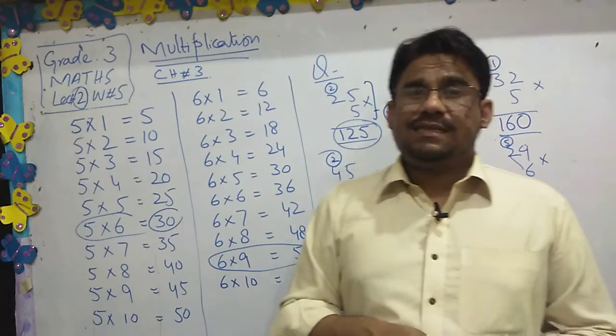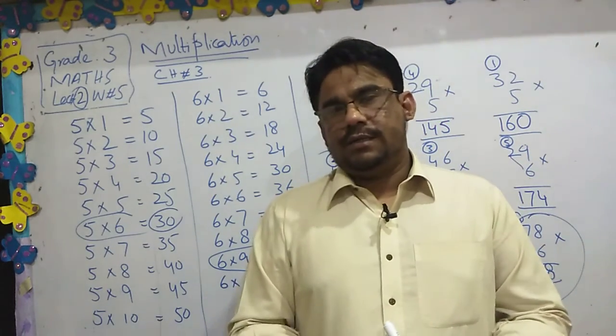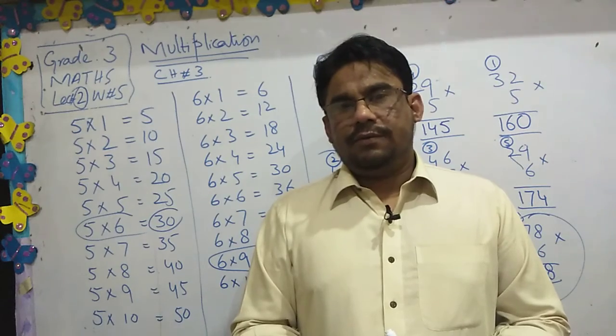6 times 7 equals 42. 6 times 8 equals 48. 6 times 9 equals 54. 6 times 10 equals 60.